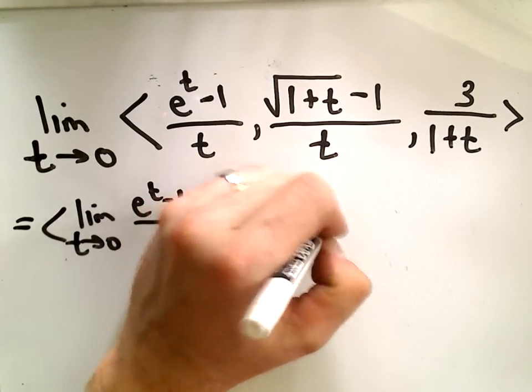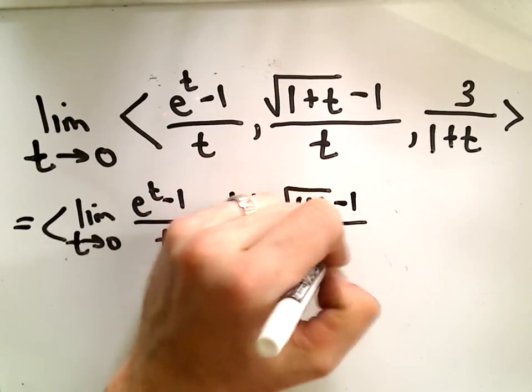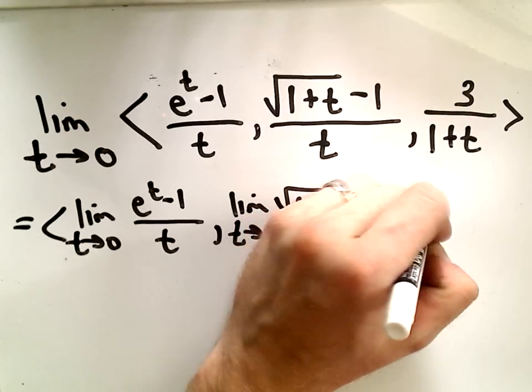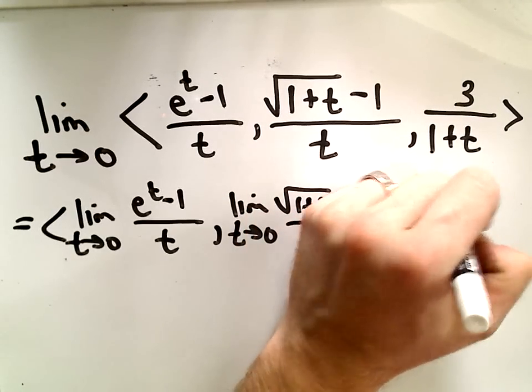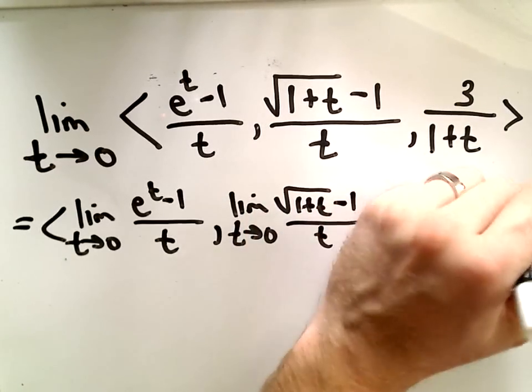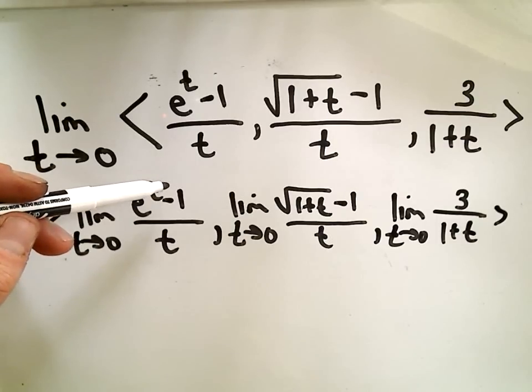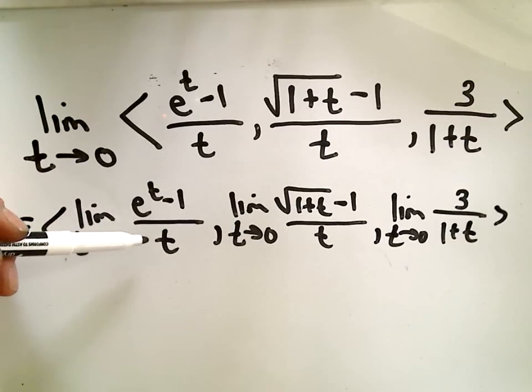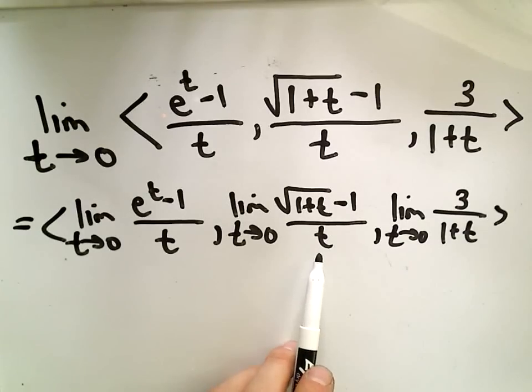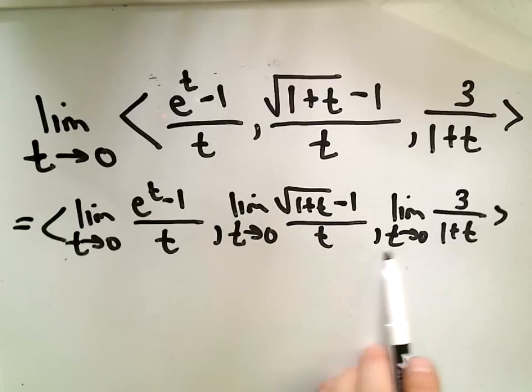So again, with limits, the first thing we try to do is simply plug the value in. I think for the first two parts, though, that's simply not going to work. If we plug 0 into the first part, notice we'll get e to the 0, which is 1 minus 1, so we get 0 on top, which is fine. But we get 0 on the bottom, and that's what messes things up. Likewise, for the denominator of the second part, we'll get 0 on the bottom. Notice we can just plug in t equals 0 on the last part, and everything will work out just fine.